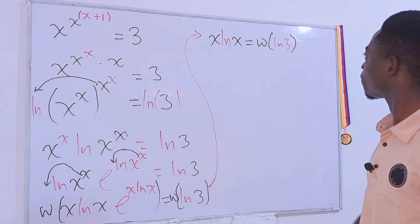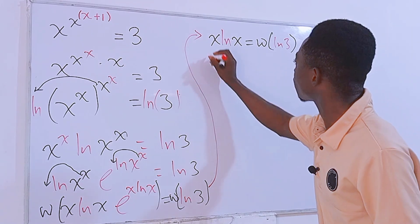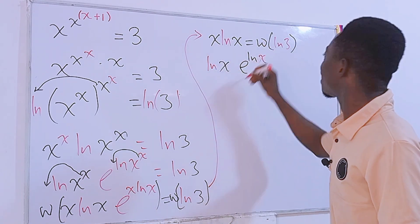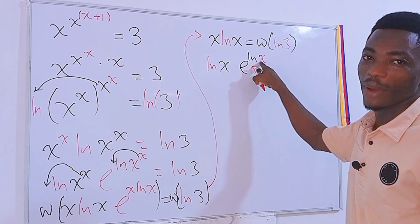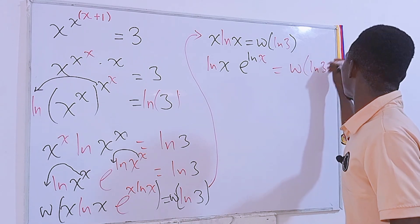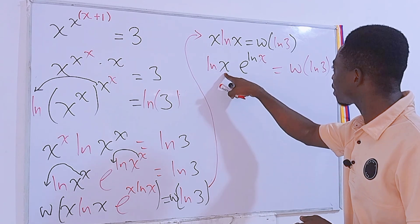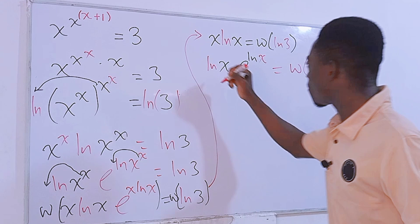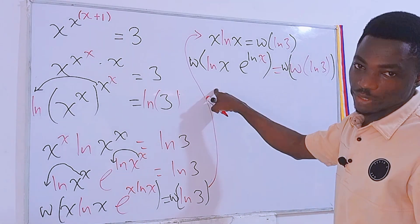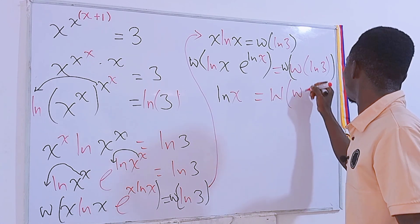It seems there is a problem again because we have x·ln(x). Just like before, I am going to rewrite this first: we have ln(x) and then see this x as e to the power ln(x), because the e and ln cancel and we get x back. On the right-hand side we have W of ln(3). Now the left-hand side is of the form ln(x)·e to the power ln(x), so we can take the Lambert W function on each side once again. The left-hand side becomes ln(x), which equals W of W of ln(3).